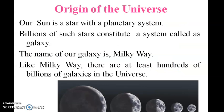Our sun is a star with a planetary system. Billions of such stars exist in a system called a galaxy. The name of our galaxy is the Milky Way. Like the Milky Way, there are at least hundreds of billions of galaxies in the universe.